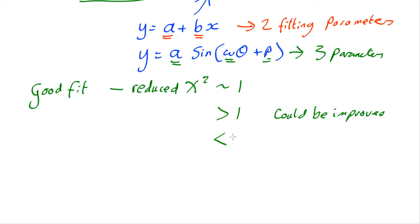If your reduced chi-squared, on the other hand, is less than one, that's telling you that your data is too close to the model. That's telling you you've had too complicated a model, or it could be that your errors are too big.